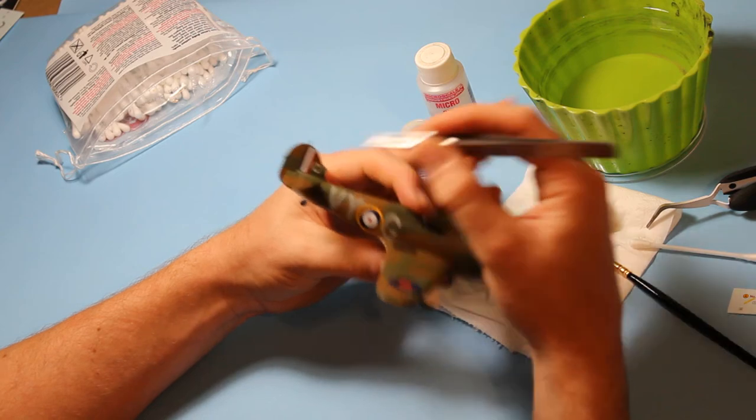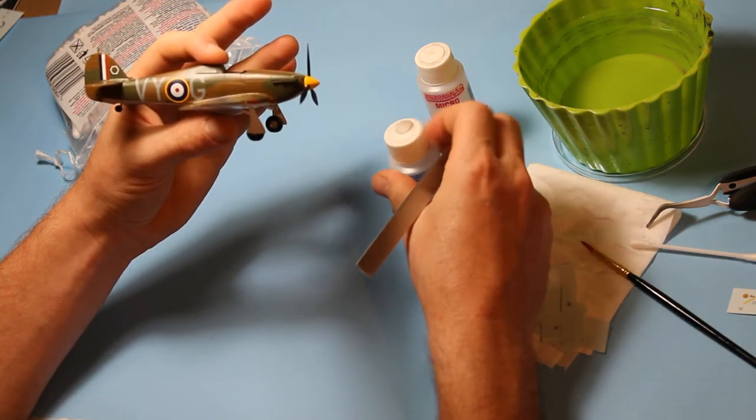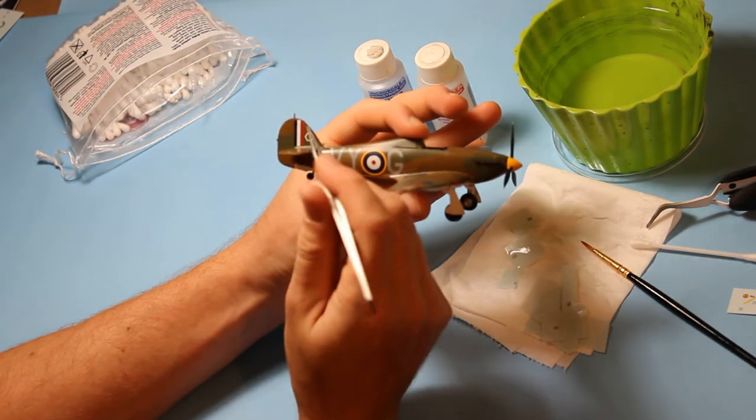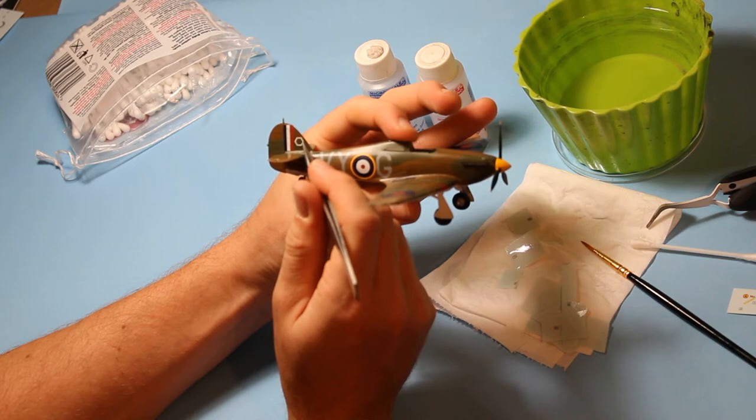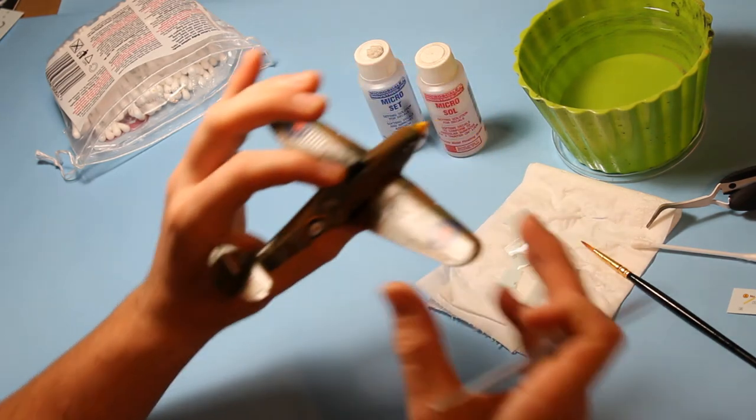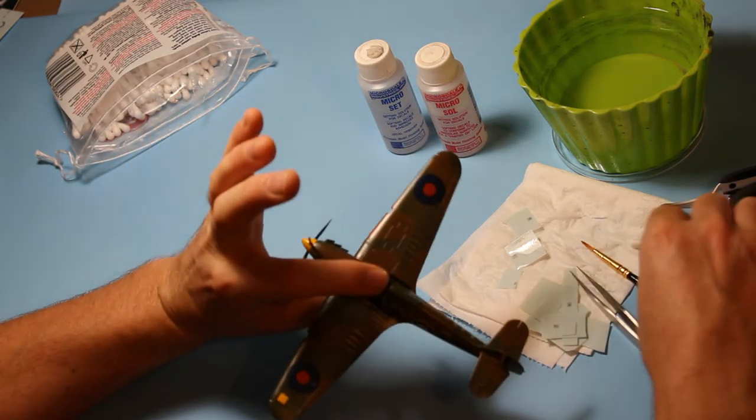It's when you start applying the micro-sole that you need to make sure everything's lined up then really. Because that can soften the decal to such an extent that you can't move it once you've done it. Flat top, yes. Very much get the lids on to these because these bottles go over for a pass time. And that can be quite a problem. Make sure everything's lined up there. I think that's looking pretty good.